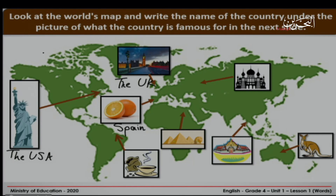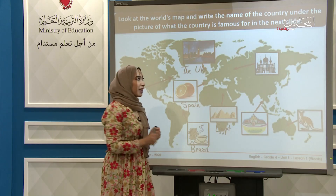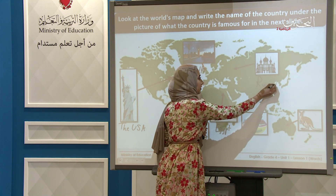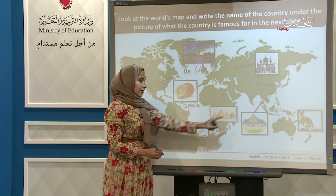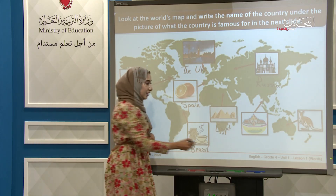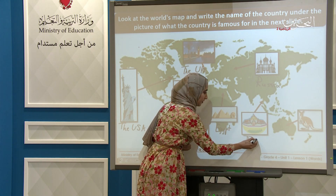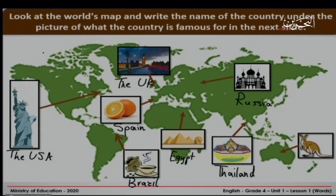Here we have Brazil — it's famous for the coffee beans. And do you know these beautiful big pyramids? They are in Egypt. Look at this grand beautiful palace; it's in the Red Square in Russia. Let's look at this beautiful building — it's in Thailand. And finally, we have Australia; it's famous for kangaroos.